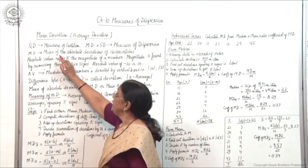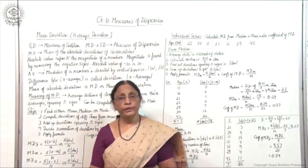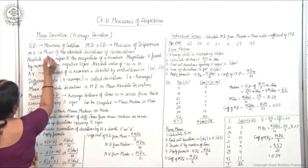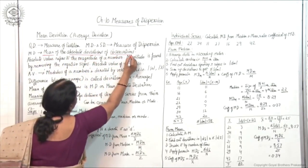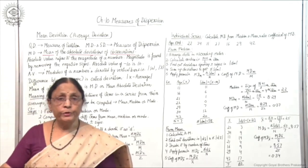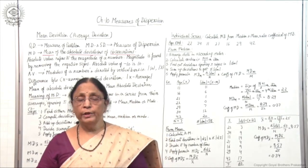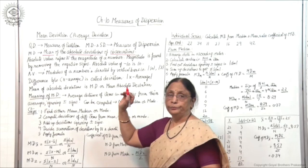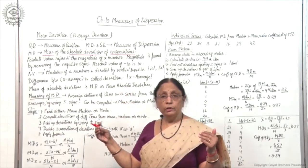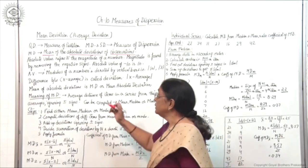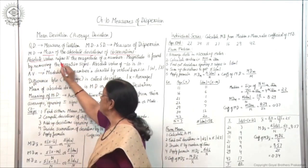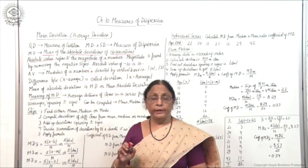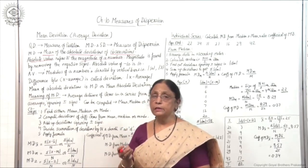Mean deviation is the mean of absolute deviations of observations. The important point is: mean of absolute deviations. Now, absolute value refers to the magnitude of a number — what is the actual strength of a number. That is clear from the absolute value. Magnitude is found by removing the negative signs; we ignore plus and minus signs.